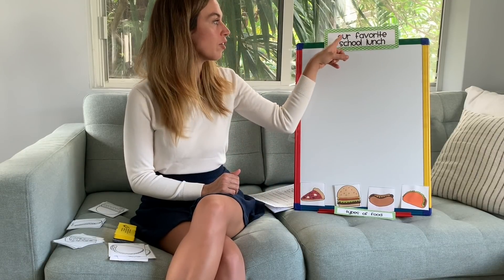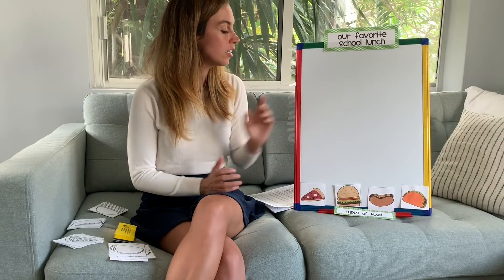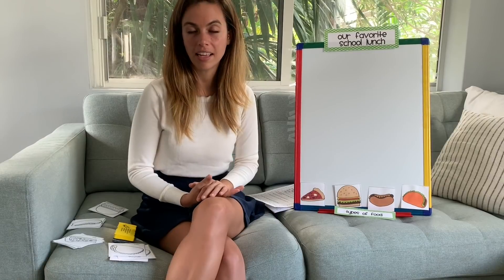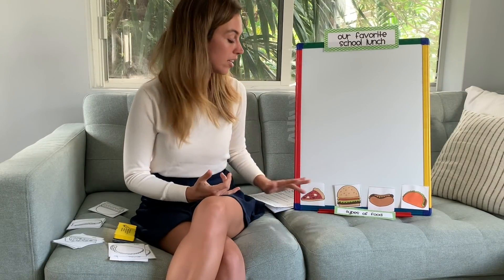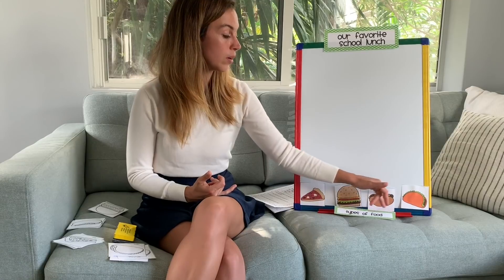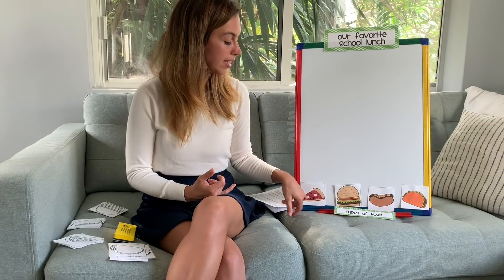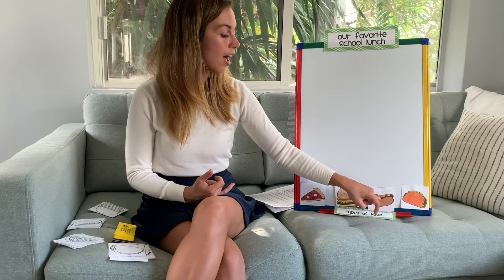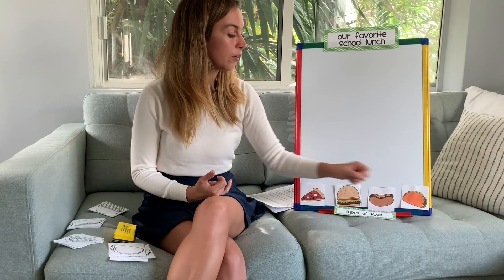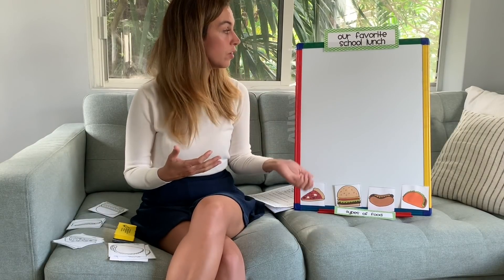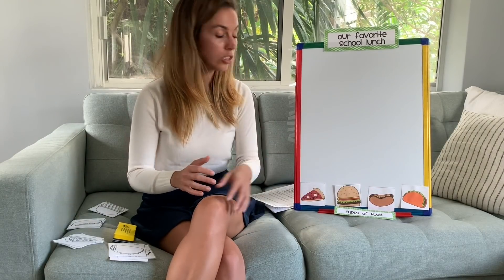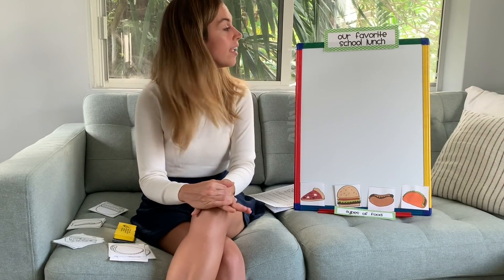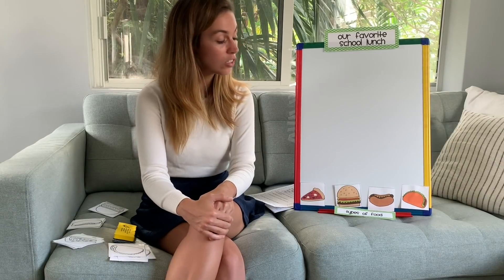The title of our graph is 'Our Favorite School Lunch.' Your favorite school lunch might not be on here, and that's okay. I want you to choose the lunch that you would most want to eat: pizza, hamburger or cheeseburger, hot dog, or taco. We're going to vote on which one is our favorite choice and then talk about our graph. We'll be making a picture graph.